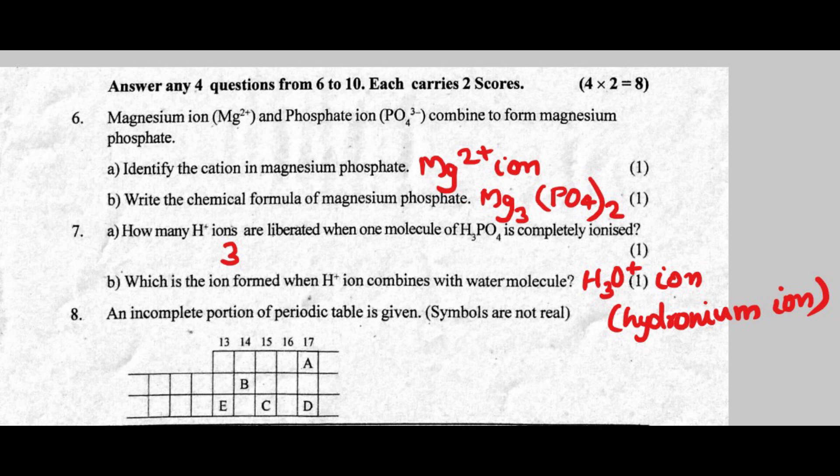How many hydrogen ions are liberated when one molecule of H3PO4 is completely ionized? Answer: 3. Which is the ion formed when H+ ion combines with a water molecule? Hydronium ion.